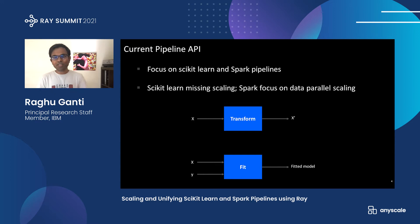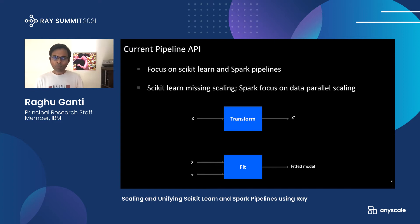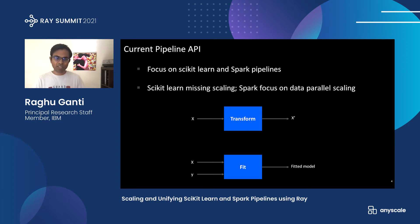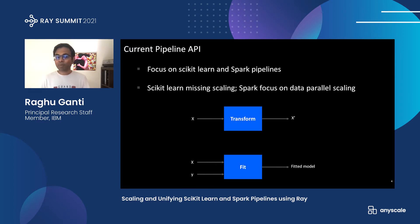To examine this, let's take a step back and look at scikit-learn pipelines. Sklearn typically has transform and fit, where transform takes an array-like pattern X and outputs X prime, and fit takes features and labels to create a fitted model. Spark took the same idea and said X can be very large as a distributed dataset, using Spark's data parallel scaling for these pipelines.